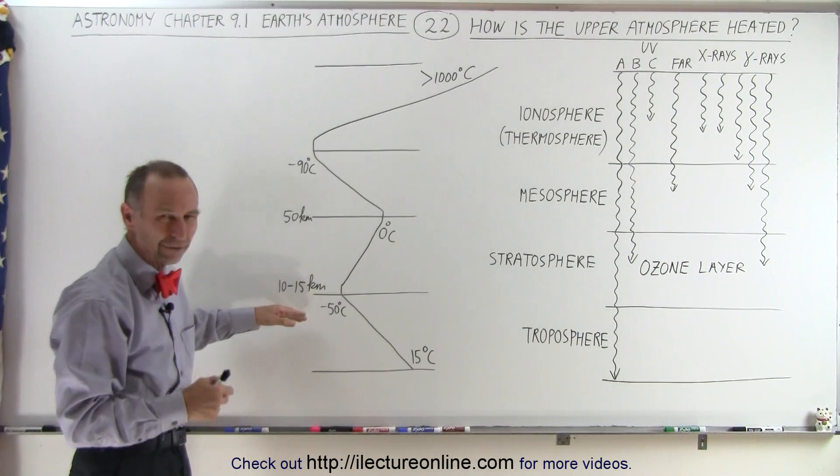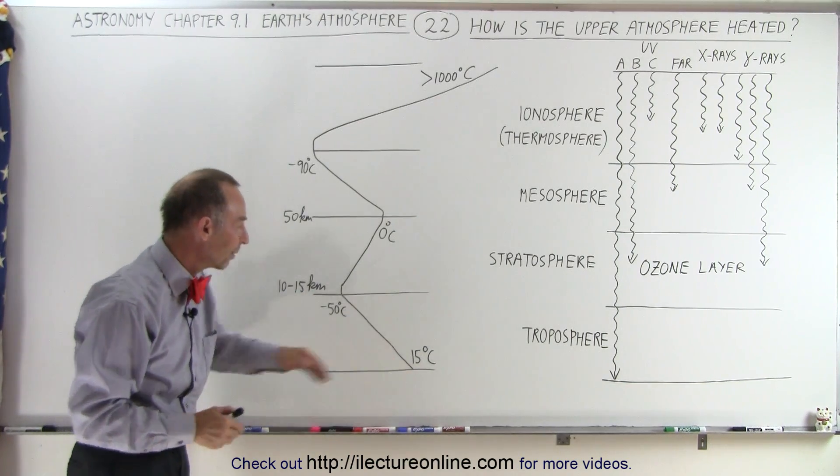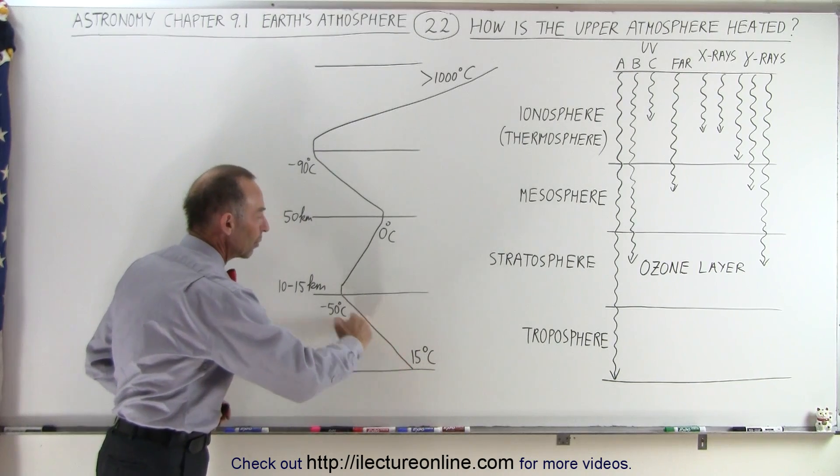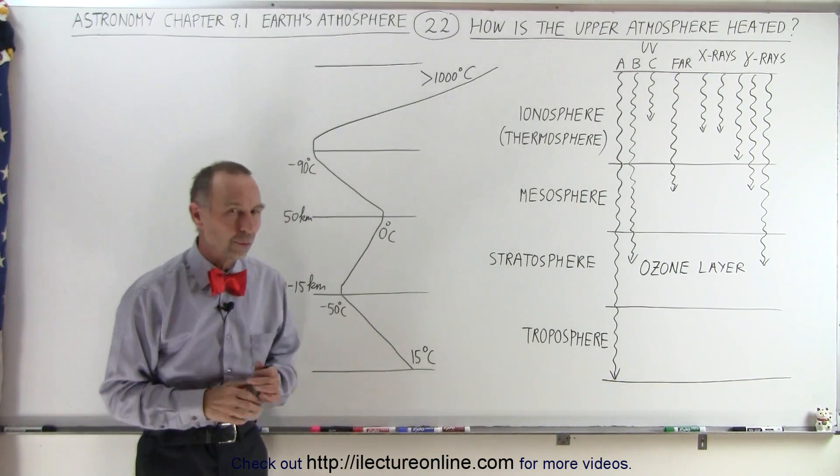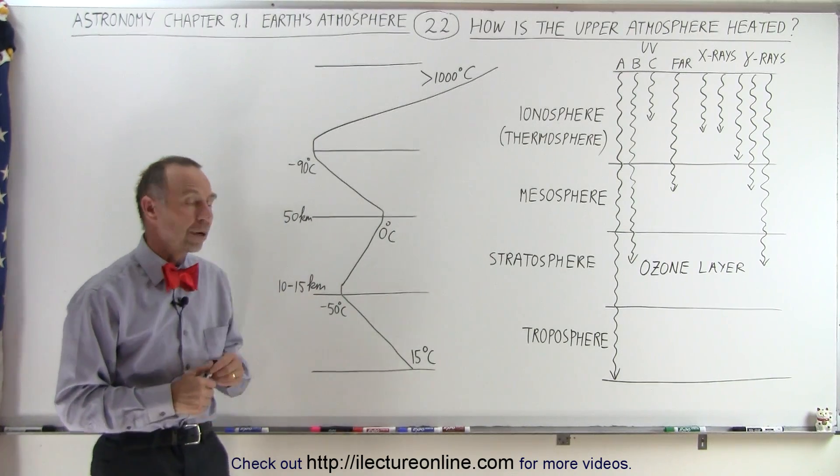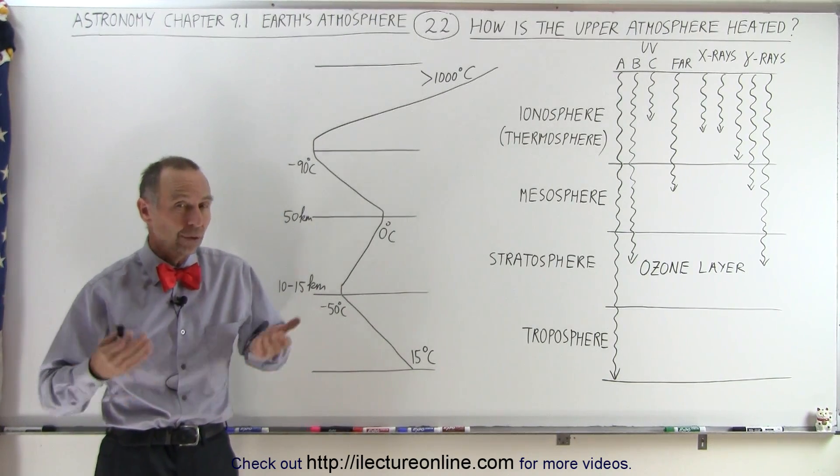So we kind of have to figure out why that is so and why the temperature gradient continues to decrease from the Earth's surface all the way to the top of the troposphere. So we'll come back and take a look at that part of the heating effect of the atmosphere and try to understand why the temperature gradient is the way it is.